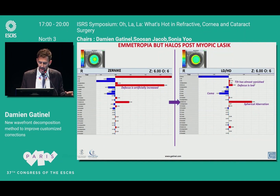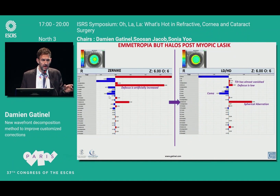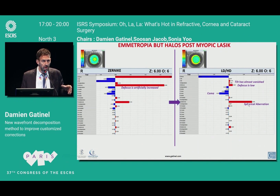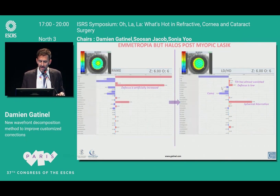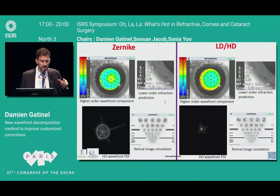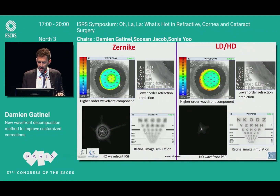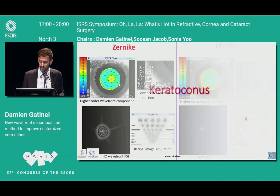Tilt has vanished — it was an artifact. Coma is now at its true value, which is higher than in Zernike where it was artificially reduced. The spherical aberration, also reduced in Zernike, is now fully expressed. Most importantly, the image prediction is now relevant — in the new mode the focus makes image prediction completely meaningful, whereas in Zernike it matches what the patient sees and the 20/15 refraction.